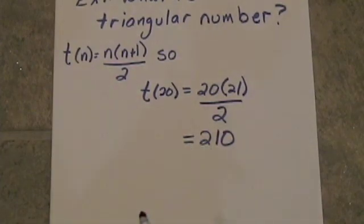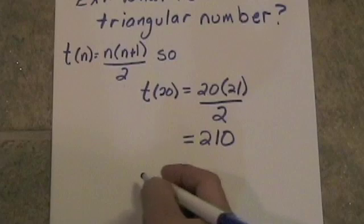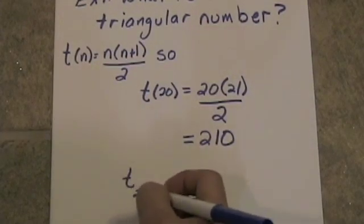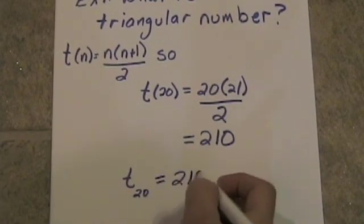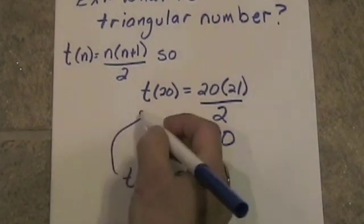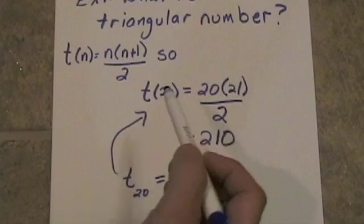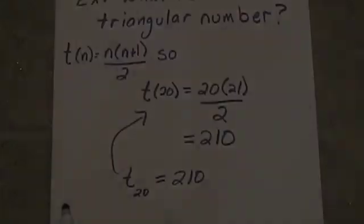Now, there's another way of writing this. Slightly different notation. We can use subscripted notation. We can say t sub 20 is equal to 210. It means exactly the same thing as this. This is subscripted notation, and this is Euler notation, or sometimes called function notation.